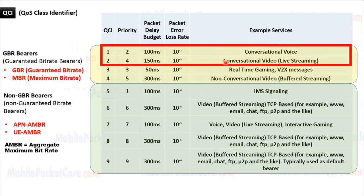From the table of QCI values, we can see that QCI1 is suitable for conversational voice, while QCI2 is suitable for conversational video.